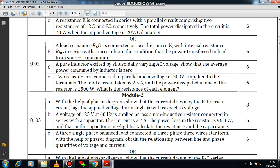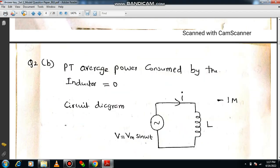I request you to go through question number 2b. A pure inductor excited by sinusoidally varying AC voltage. Show that the average power consumed by the inductor is zero. You should have a basic knowledge on average value. I have already explained one video, how to derive the expression for average value, the importance of average value. I request everyone to watch that video first, later answer this question. It is also having better credit. Actually 8 marks question. How to answer this?